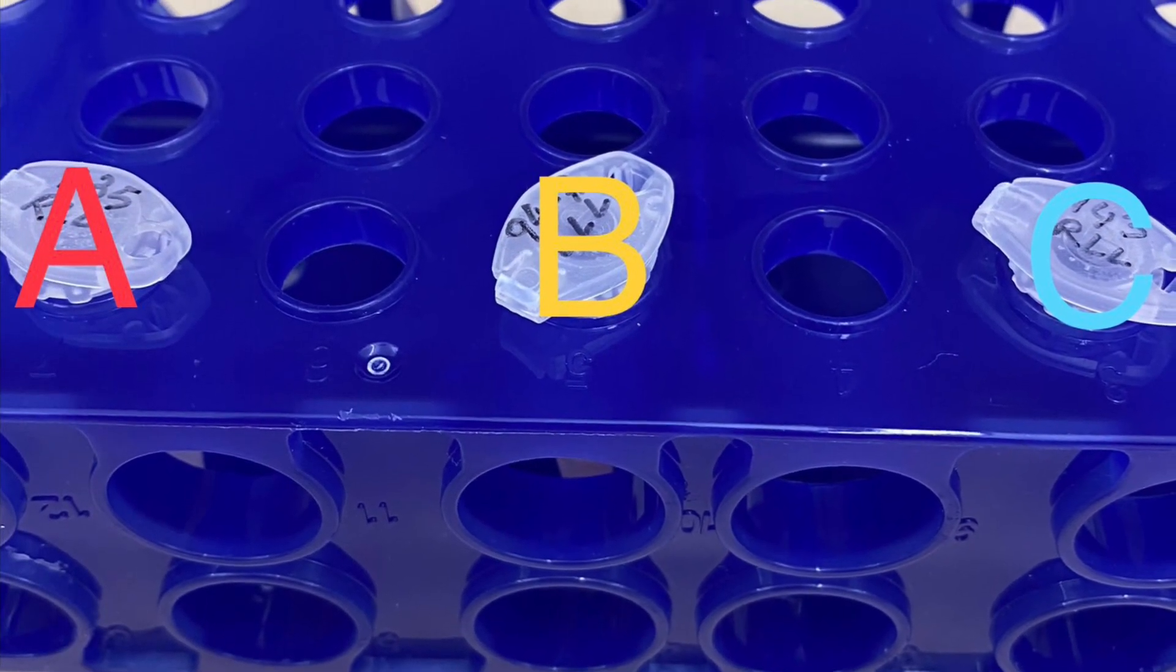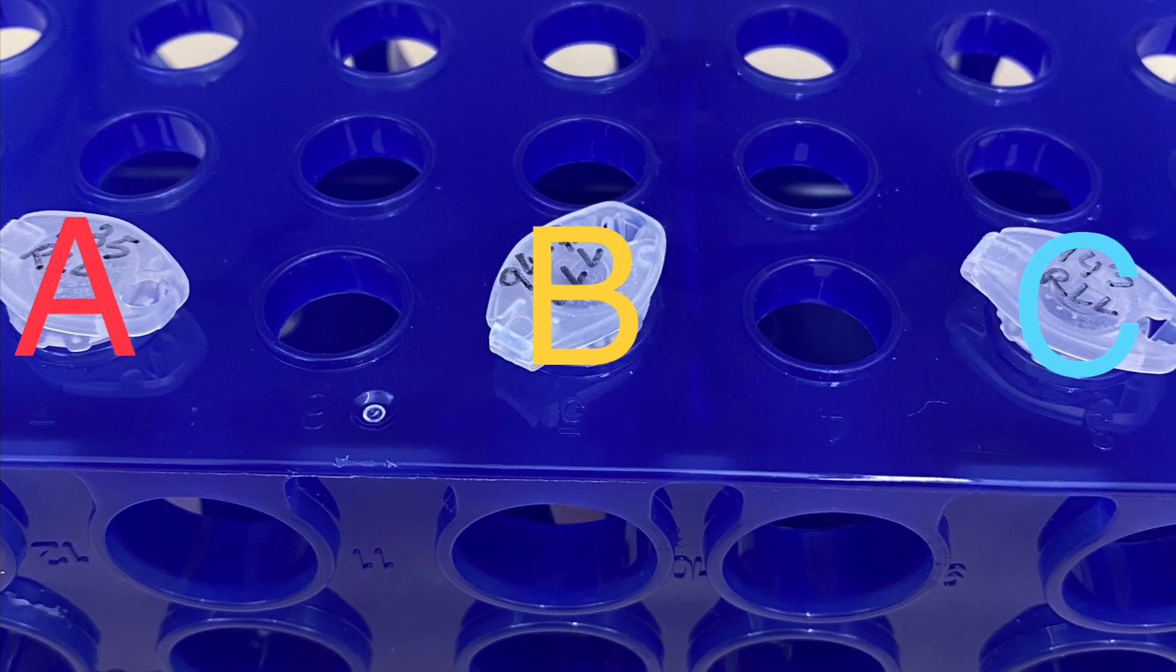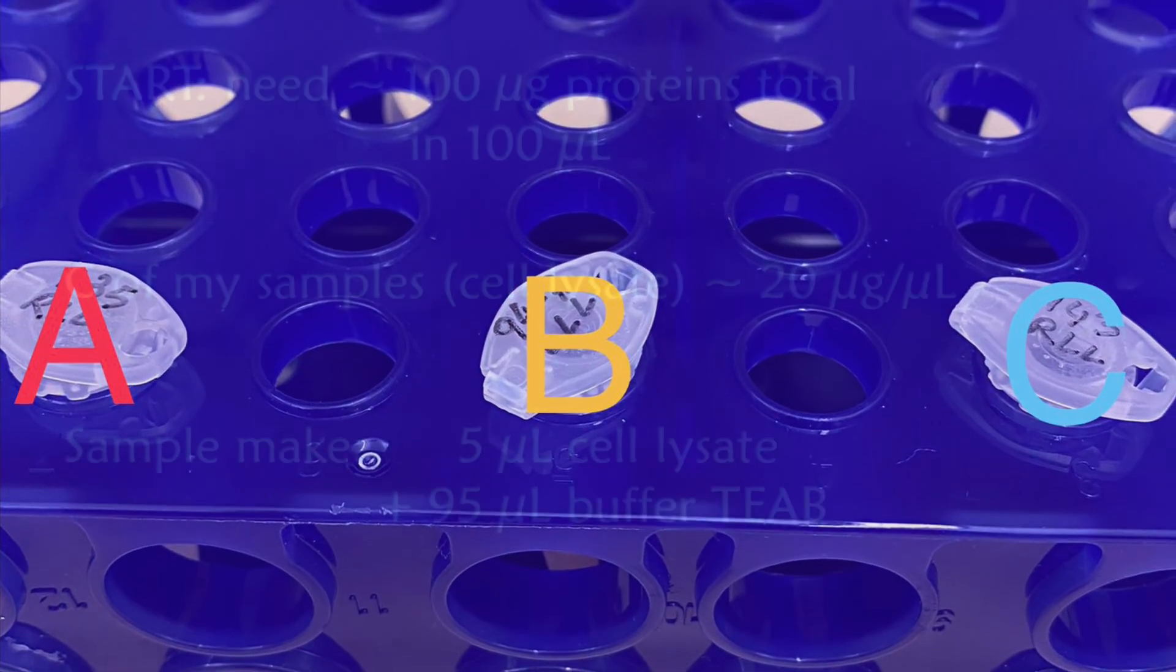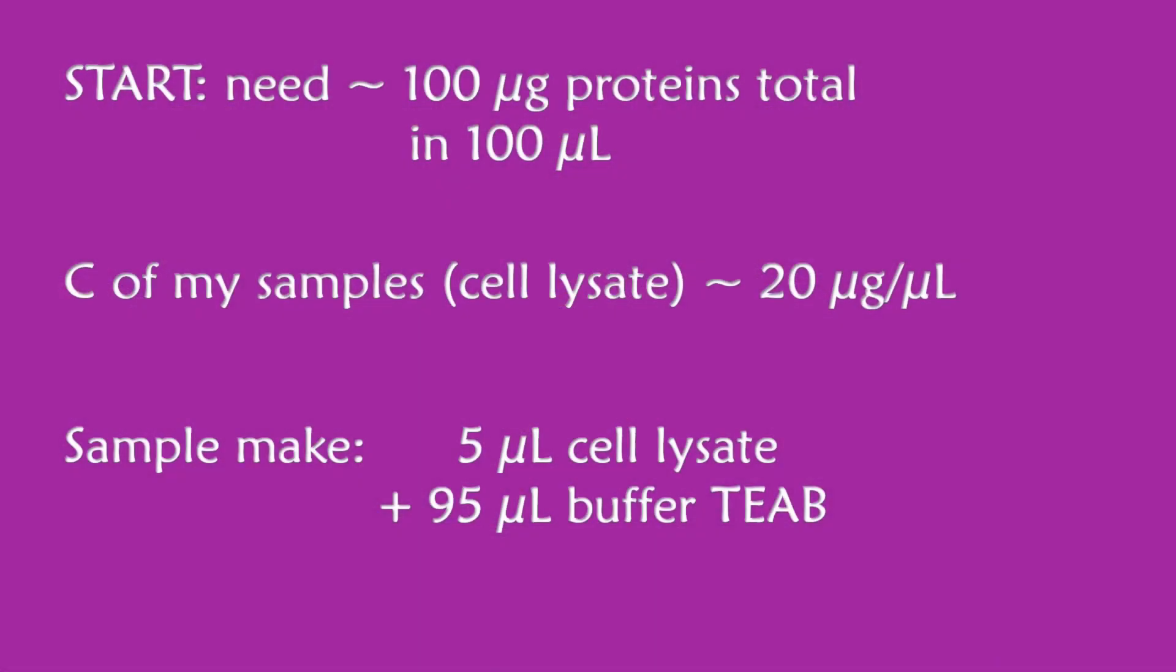I have three samples for today. I just label them as A, B, C. I like to start with 100 micrograms of total proteins. That way I know I'm going to have enough for later. Don't be too brave to go lower than 30, but anything between 30 and 100 should be fine.